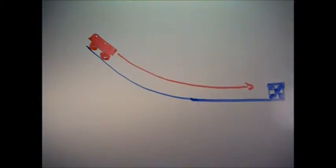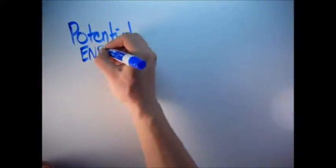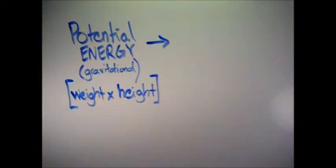Now let's break down the physics. Your car on the track only starts with gravitational potential energy. The equation looks like this. You start with potential energy gravitational, which is the weight times the height.